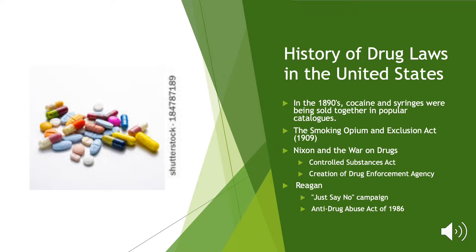Moving forward to the 1960s and Nixon's war on drugs — this is really where our story begins. There was a big spike in drug abuse during the 1960s, and Nixon led an initiative and increased federal funding for drug control agencies. He proposed strict measures for drug-related crimes with the adoption of mandatory sentencing. The Controlled Substance Act was signed by Nixon in 1970, enabling the regulation of certain drugs. The CSA also classified drugs into five different categories, from Schedule I drugs, which are the most addictive, to Schedule V.